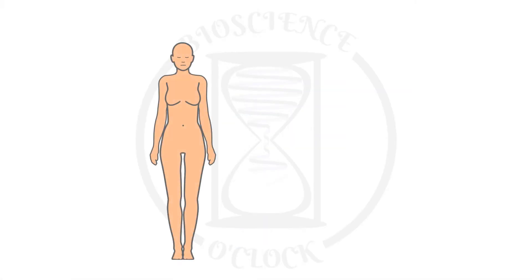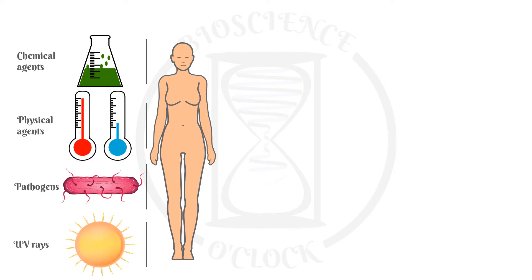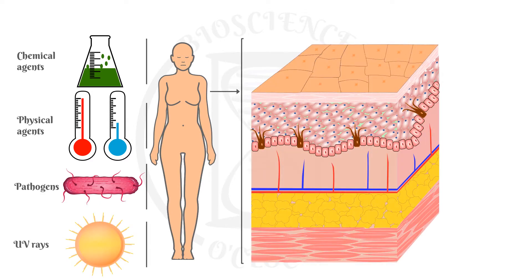The skin is the largest organ in our body. It is the first barrier against chemical and physical agents, against pathogens, and UV rays. The skin is divided into three layers: epidermis, dermis, and hypodermis.